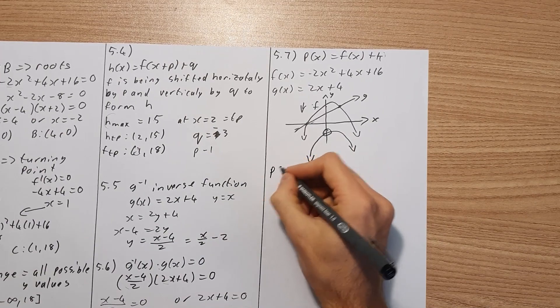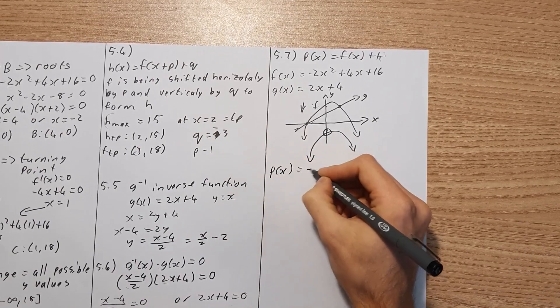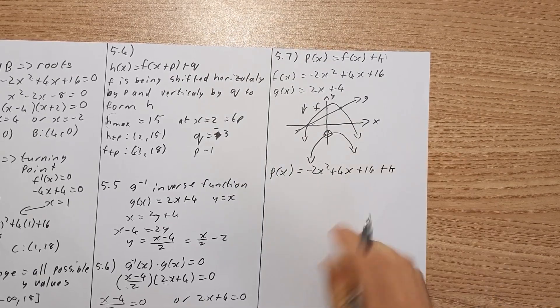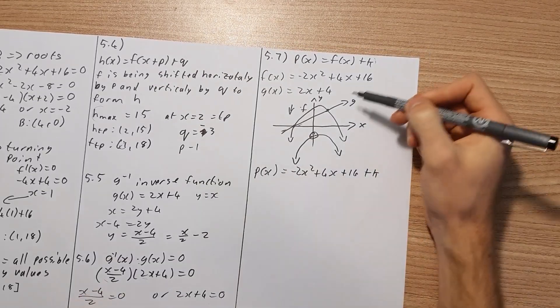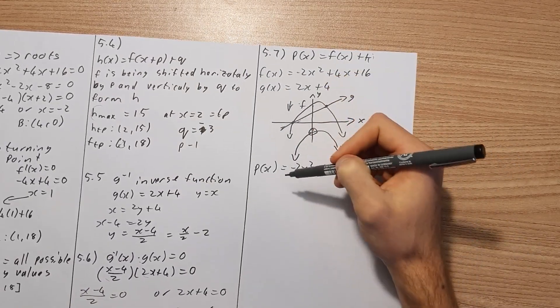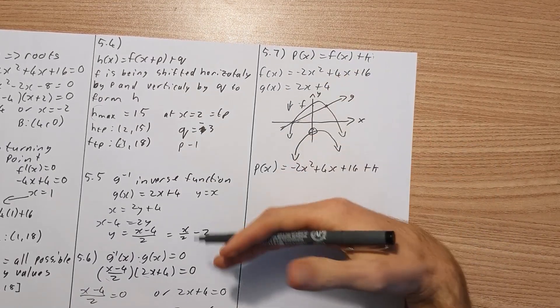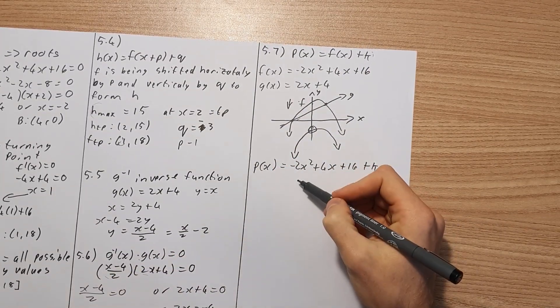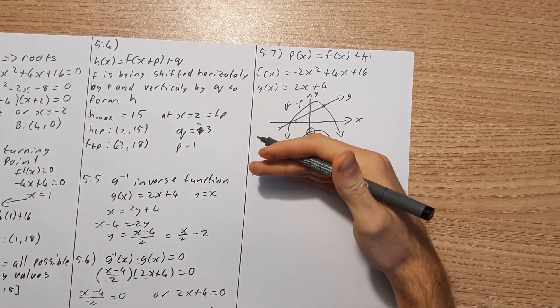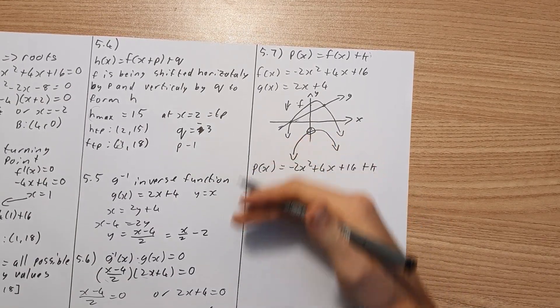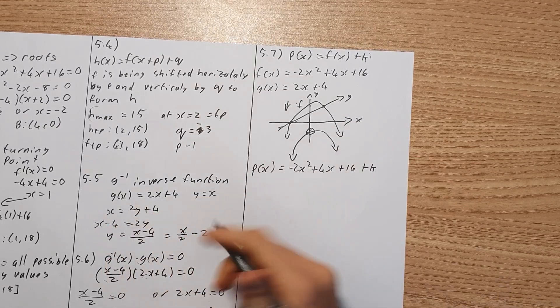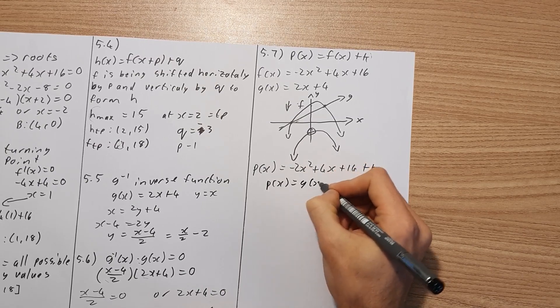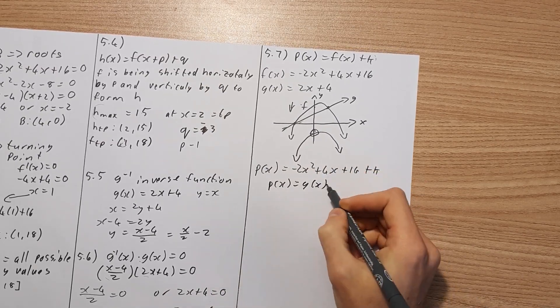Therefore, I need to shift p, or I need to shift f down to create p, such that I never have an intercept again. So therefore, we know that k needs to be negative. So I need to shift down f in order to create p. So p is probably going to sit somewhere here. And now we want to find the k value, which is our y intercept. So let's quickly create p. So p of x equals negative 2x squared plus 4x plus 16 plus k. Now normally, when we want to find intercepts, we equate the two equations to each other.